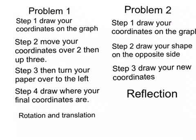So if you didn't quite understand it, I'll show you in easy steps and explain it a lot easier. So for problem one, for step one, we had to draw your coordinates on the graph as shown. And then step two, you have to move your coordinates over two, then up three. Then after that, we have to then turn your paper over to the left to get your rotation. It's actually a lot easier on paper because you can actually turn it and see where it will end up next. For then step four, draw where your final coordinates are and draw where it is. And that was rotation and translation together.